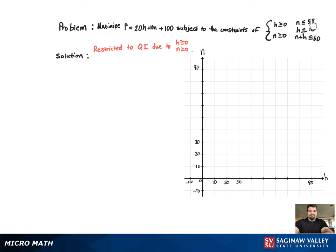Now we will look at the two constraints: n less than or equal to 55 and h less than or equal to 10. One of those is vertical, the other is horizontal, and we can just put those on right away.